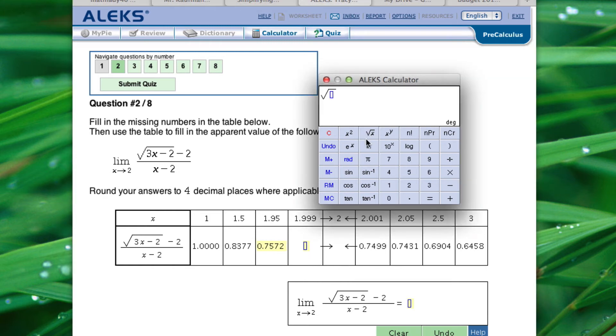So the square root of 3 times 1.999 minus 2. Click on the outside of that. Subtract 2. Highlight the whole thing. Divide by 1.999 minus 2. And we get 0.7501. So we can see this is getting closer and closer to 0.7500.